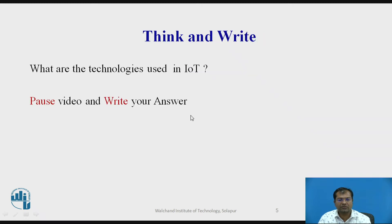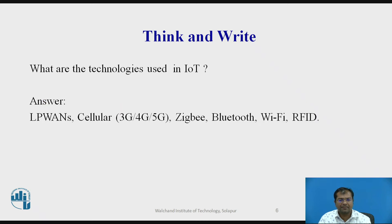Think about this question: What are the technologies used in IoT? Pause this video and write your answer. The answer is: the technologies used in IoT are low power wireless array network, cellular systems like 3G, 4G, 5G, Zigbee, Bluetooth, Wi-Fi, and RFID.